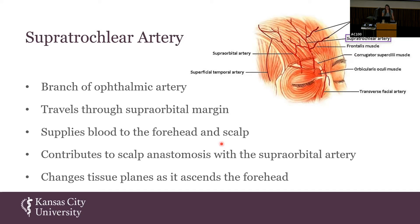It's also important to note that the supratrochlear artery changes tissue planes as it ascends the forehead, and this is particularly important for my research. In the bottom third of the forehead, it travels above the periosteum. In the middle third, it travels within the frontalis muscle, as seen in this image. And in the top third, it travels within the subcutaneous fat.